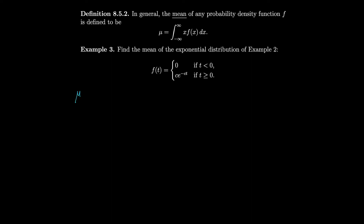We have mu equal to the integral from minus infinity to infinity of t times f of t dt. Since our piecewise function is 0 for negative t, that's just the integral from 0 to infinity of t times c·e^(−ct) dt. We can use integration by parts here since we have a product.